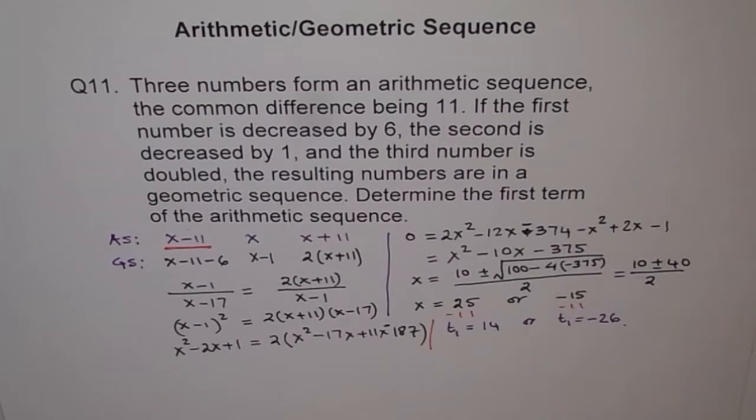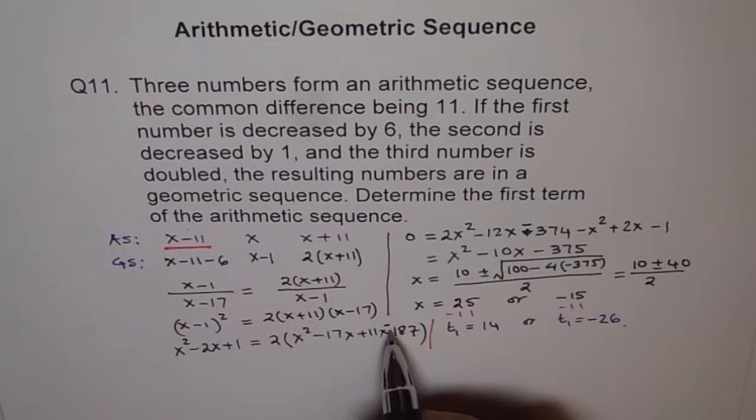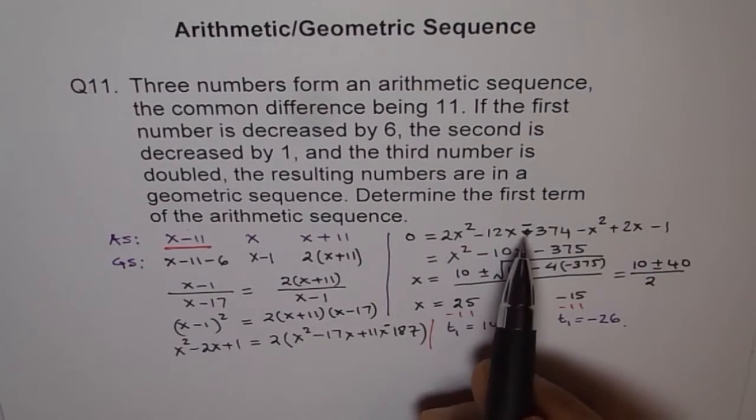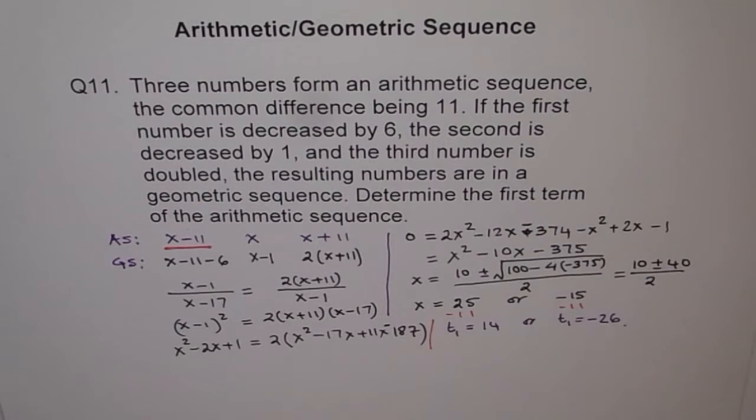I hope you understand how we did it, correct? Note this correction we made, we forgot to write minus here and then 2 times minus 187 is minus 374, combine the terms, use the quadratic formula and get the values. I hope you appreciate it. Thank you.